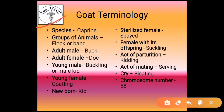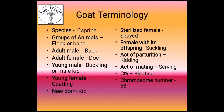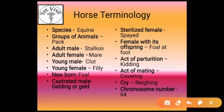For goat, the species is caprine. A group of animals is known as flock or band. Adult male of goat is known as buck. Adult female of goat is known as doe. Young male of goat is known as buckling or male kid. Young female of goat is known as doeling. Newborn of a goat is known as kid. Sterilized female of goat is known as spayed. Female with its offspring is known as suckling. Act of parturition in goat is known as kidding. Act of mating in goat is known as serving. Cry in goat is known as bleating. Chromosome number is 58.